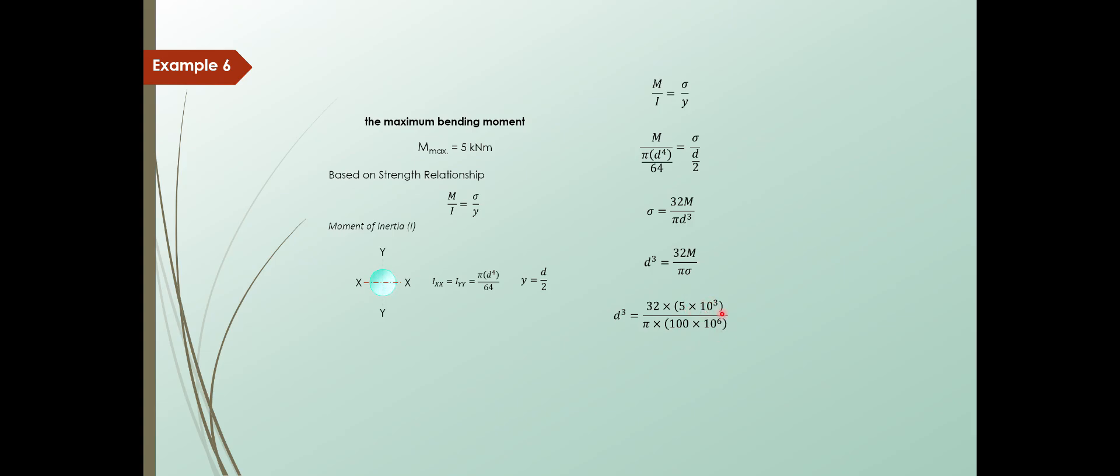Substituting the maximum bending moment and the maximum bending stress. Cube this values here. So you will get your diameter of the shaft that is required to transmit this amount of bending as 79.8mm. In this case, we have no torsion. No torque included. So only bending moment. So you have 79.8mm as the answer.